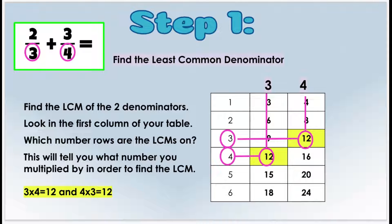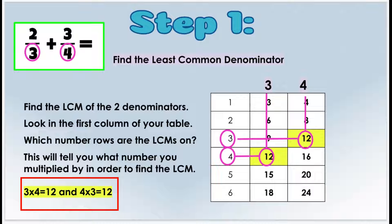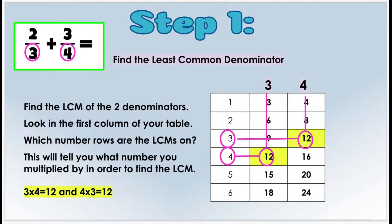The first thing I'm going to do is write out my multiplication sentences that gave me the least common multiple. For three, we have three times four equals 12, and for four we have four times three equals 12. Keep those multiplication sentences handy because we're going to need them.